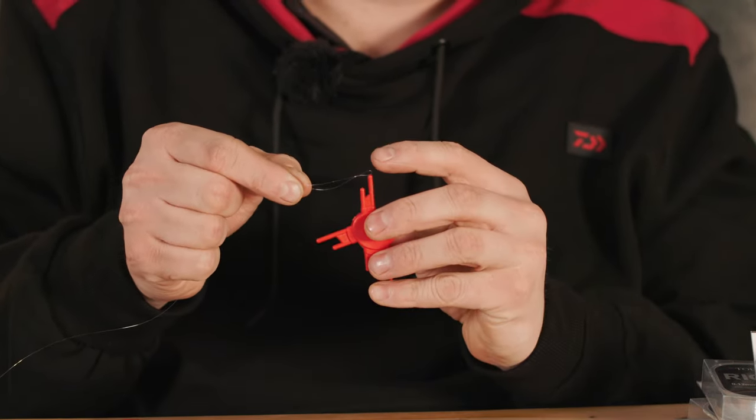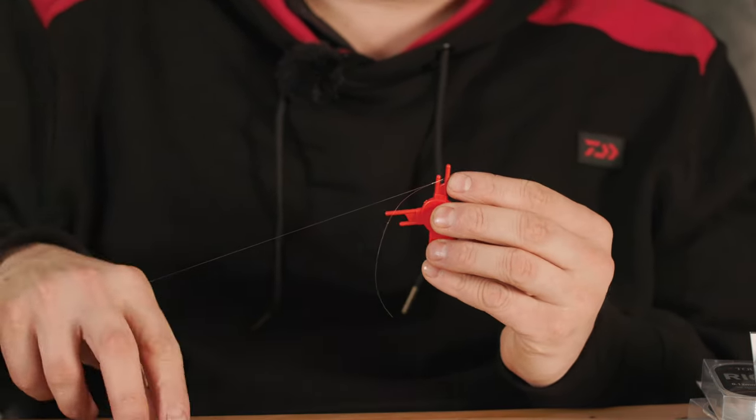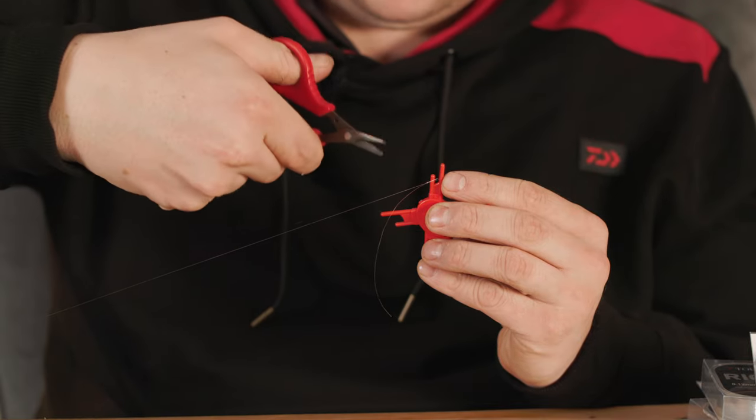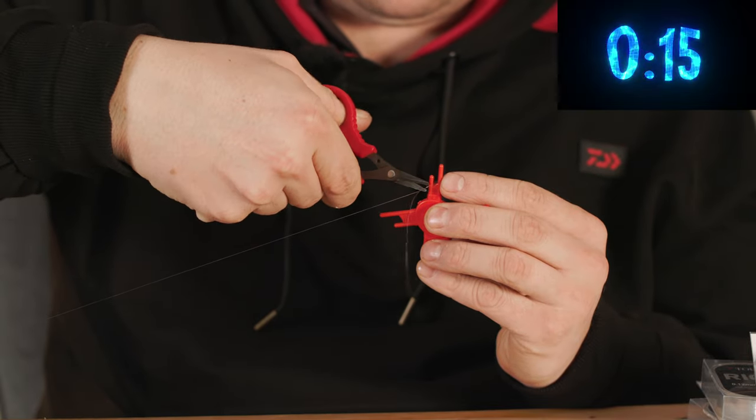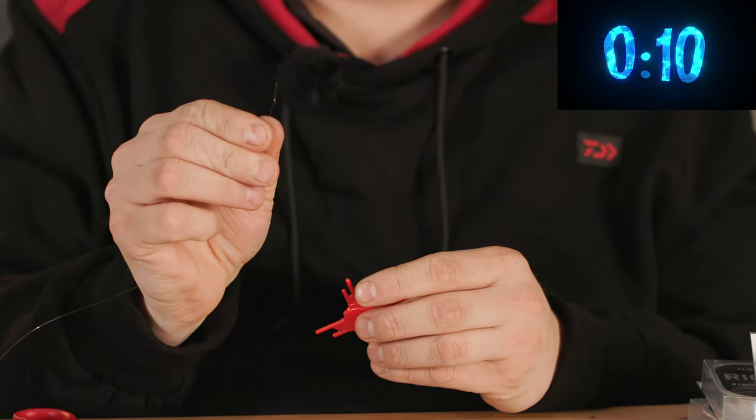While that's on there, if I've got the line under tension, which it should be, I can keep that nice and tight. Then my right hand or left hand, whatever you prefer, just trim that off absolutely perfect and you're left with a perfect little loop every time.